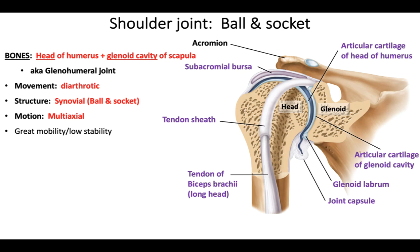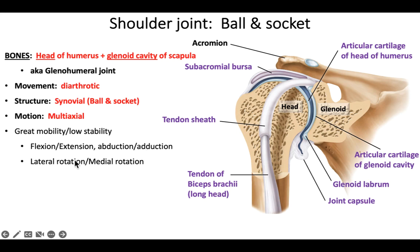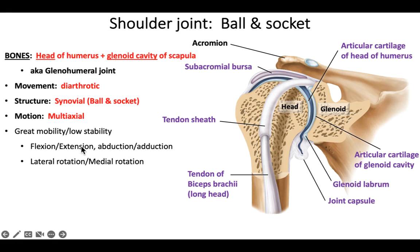Structures help stabilize the shoulder — an example is the rotator cuff muscles. The specific motions allowed at the shoulder joint are: flexion and extension, abduction and adduction, lateral rotation (rotating away) and medial rotation (rotating inward). These are the six motions that all ball and socket joints allow. We'll revisit these when we get to the hip joint. It's important to understand these motions now, because when we study muscles we'll learn what muscles cause each action.